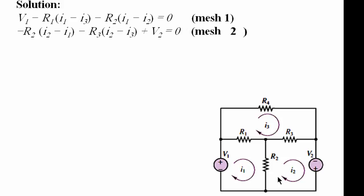For mesh two, starting from this point: minus R2 multiplied by (I2 minus I1) — the sign is minus because it's a resistor — minus R3 multiplied by (I2 minus I3), plus V2, equals zero.